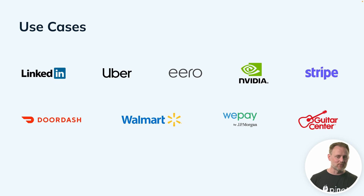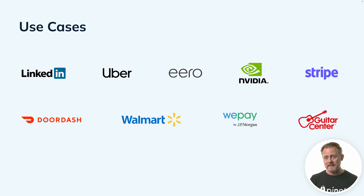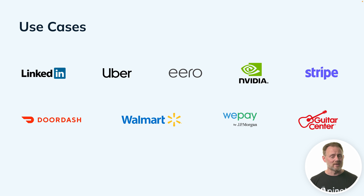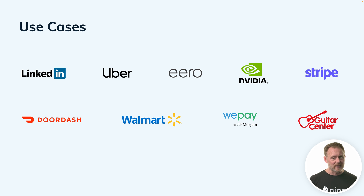Who uses Pinot and what do they use it for? It is broadly adopted. It was originally created at LinkedIn and is used all over the place in ordinary consumer use of LinkedIn — reading your feed, looking at who viewed your profile, interacting with posts. Uber is a heavy user, especially in their Uber Eats product. Similarly, DoorDash and lots of meal delivery services use Pinot. NVIDIA is a user, Stripe, and there are lots of other financial services applications burgeoning right now. Walmart, WePay, even Guitar Center — all kinds of different use cases, companies, and sectors are making use of real-time analytics.